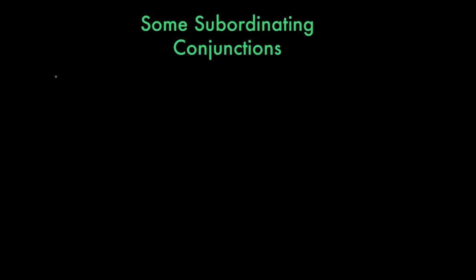So, with that in mind, here are some of the most common subordinating conjunctions in English. And some of these you might recognize as being adverbs or prepositions in other contexts, but you can also use them to unite dependent and independent clauses. So, here we go.